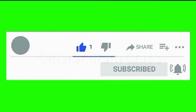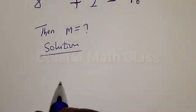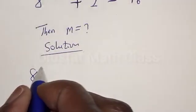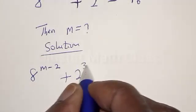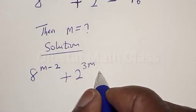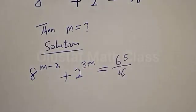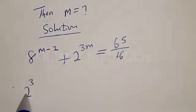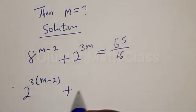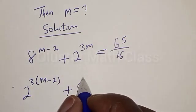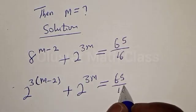Solution. We have 8 raised to power m minus 2 plus 2 raised to power 3m is equal to 65 divided by 16. Now 8 can be expressed as 2 raised to power 3, giving us 2 raised to power 3 times (m minus 2) plus 2 raised to power 3m is equal to 65 divided by 16.